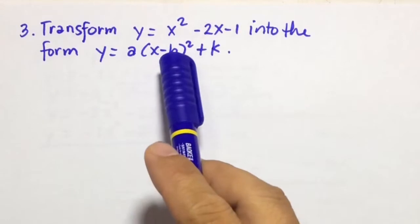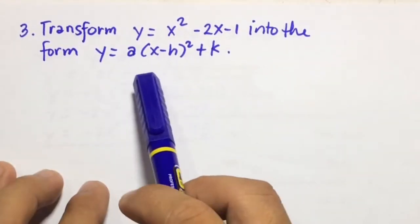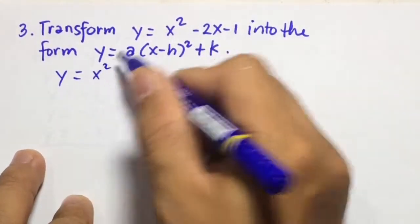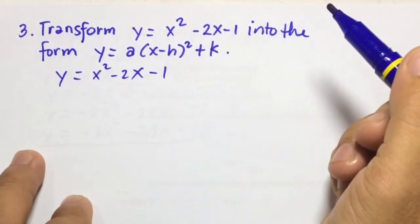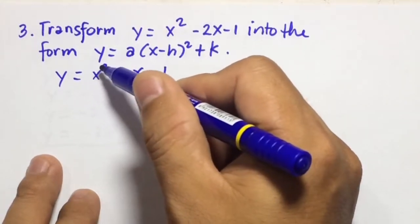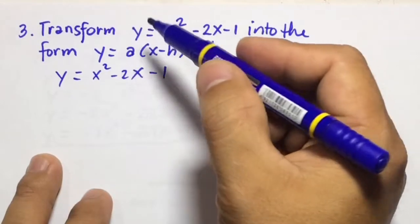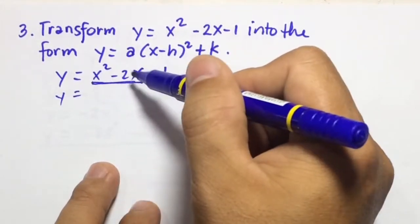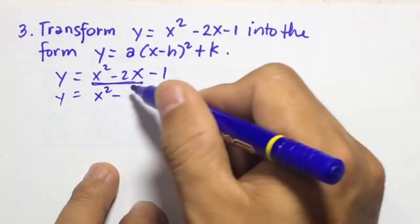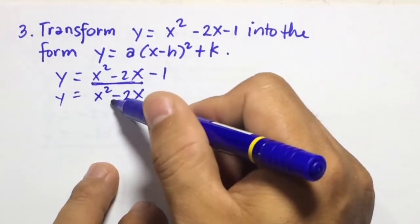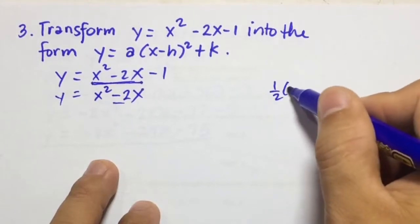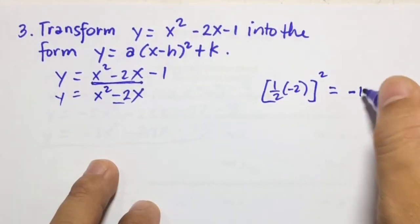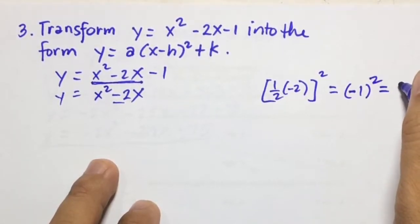Number 3: transform y equals x squared minus 2x minus 1 into the form y equals a times the quantity of x minus h squared plus k. So we write first y equals x squared minus 2x minus 1. Since the numerical coefficient of the x squared term is 1, we're going to directly complete the square of the x term. The numerical coefficient of x is negative 2, so we take one half of negative 2 squared. One half of negative 2 is negative 1, so we have negative 1 squared, which equals 1.